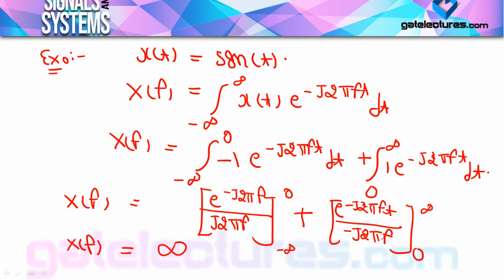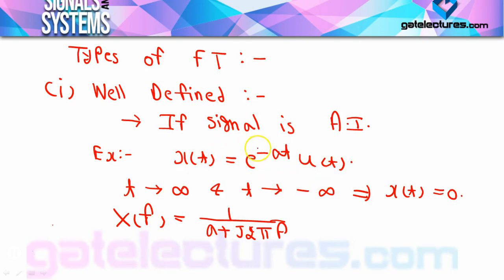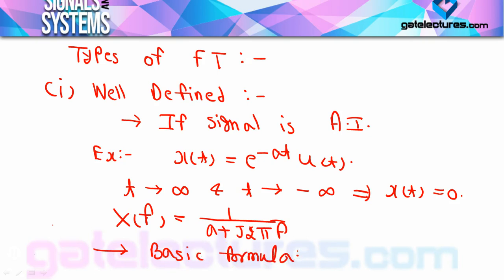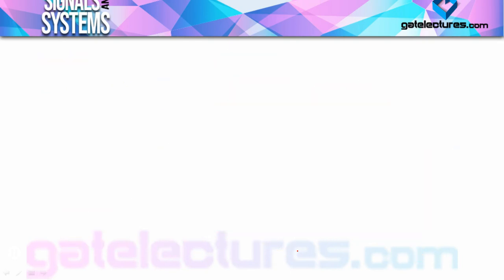We know from the last video that the Fourier transform of signum(t) is 1/(jπf), but when solved using the basic integration formula it gives infinity. So the conclusion is: when your x(t) is absolutely integrable (well-defined Fourier transform), you can use the basic Fourier transform formula and get the correct answer.